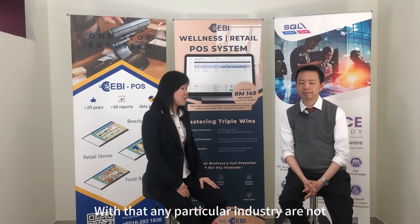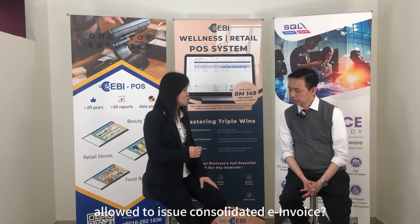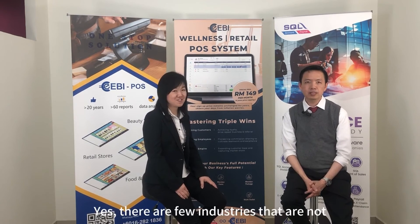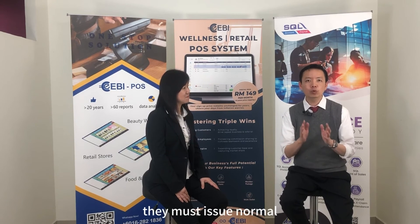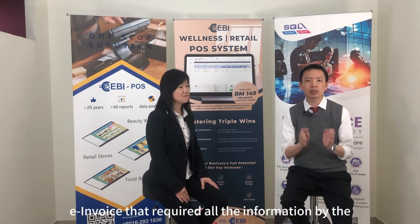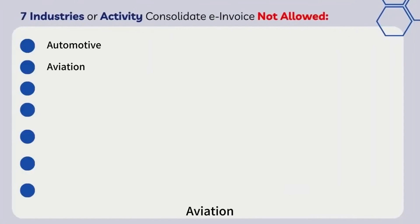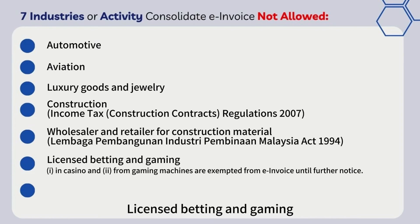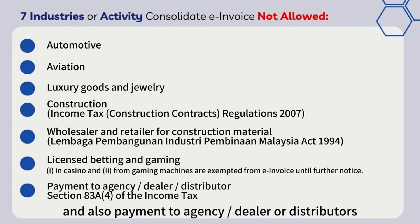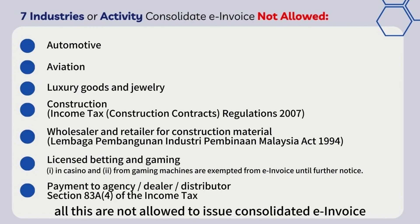Are there particular industries that are not allowed to issue consolidated e-invoice? Yes, there are a few industries that are not allowed to issue consolidated e-invoice — they must issue a normal e-invoice with all the required customer information. These include: automotive, aviation, luxury goods and jewelry, construction, wholesalers and retailers of construction materials, licensed betting and gaming, and payments to agents, dealers, or distributors. All these industries are not allowed to issue consolidated e-invoice.